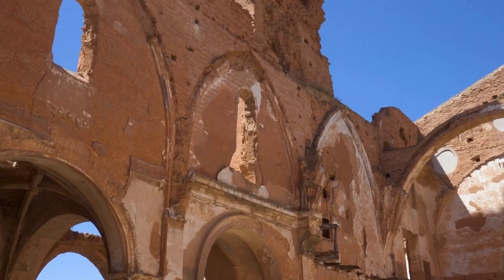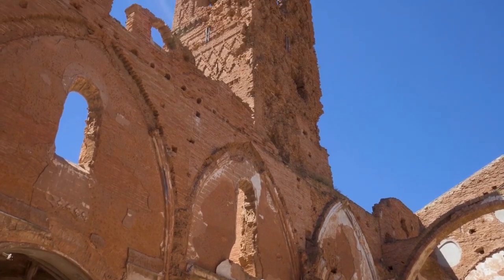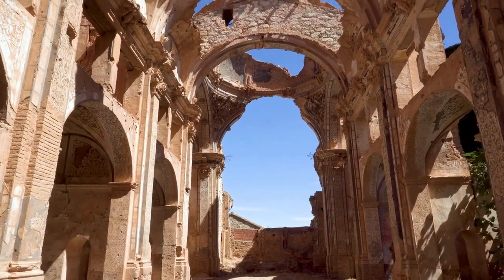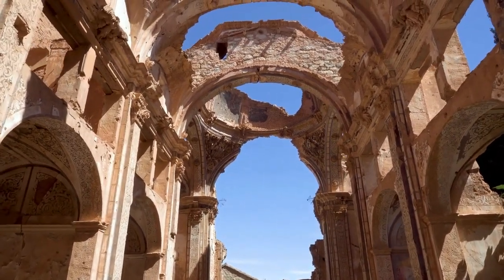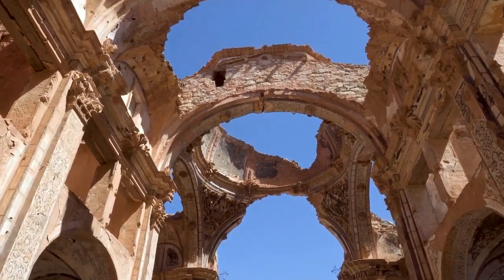We can't pinpoint the exact origin of sacred geometry in ancient civilizations. However, it's likely that as these cultures observed nature, they identified recurring geometric patterns, such as circles, spirals, and triangles.